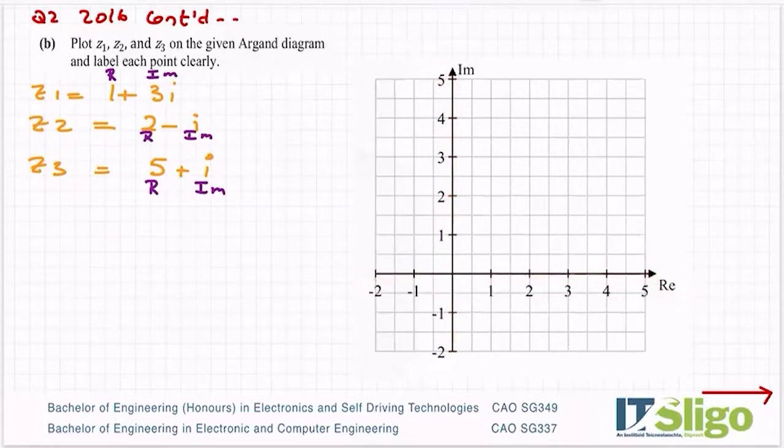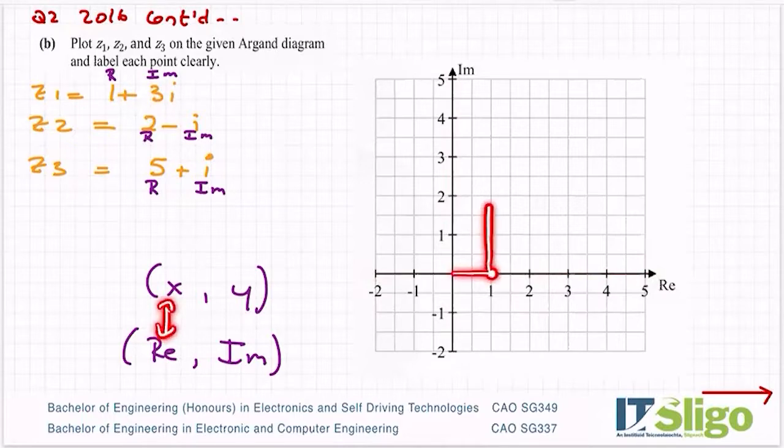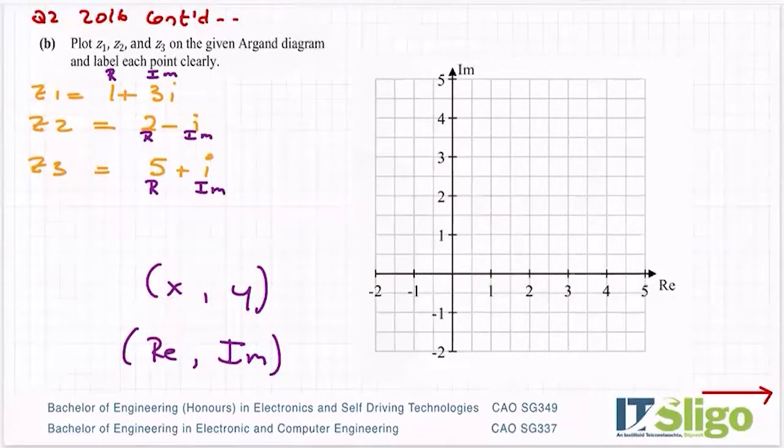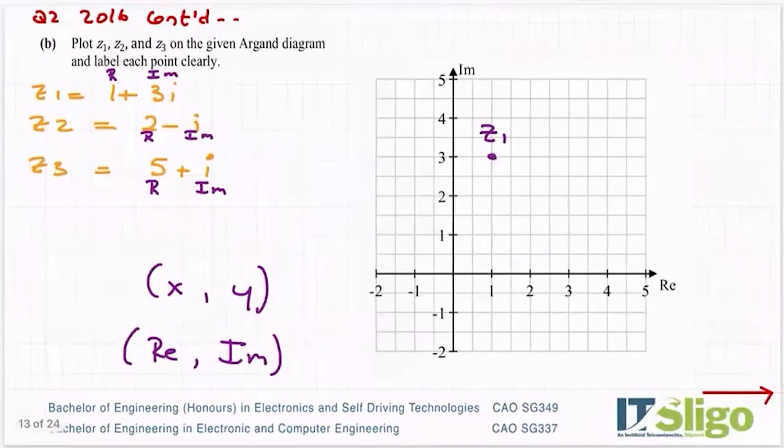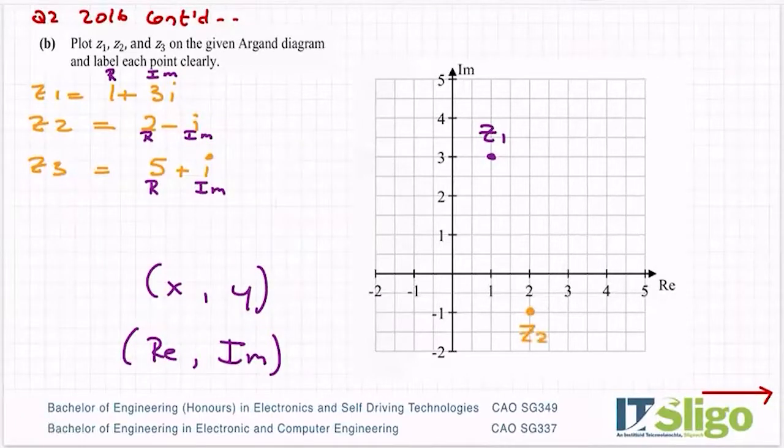It's very like x comma y, except in this one we're doing real comma imaginary. That's how you plot. To plot this one 1 plus 3i it's over 1 on the real axis, which is like the old x axis, and it's up to plus 3 on the imaginary axis. So that is Z1. Z2 is 2 minus i, so over to 2 and down to minus 1i. That is my Z2. And then my Z3 is all the way over to 5 and up to 1i.